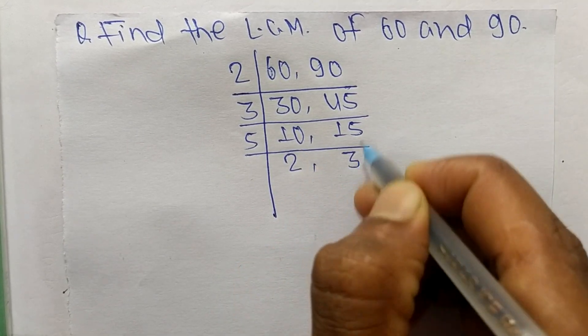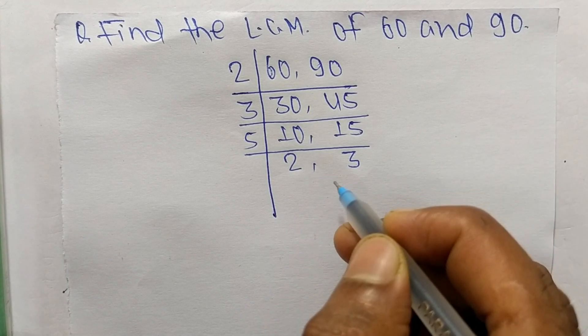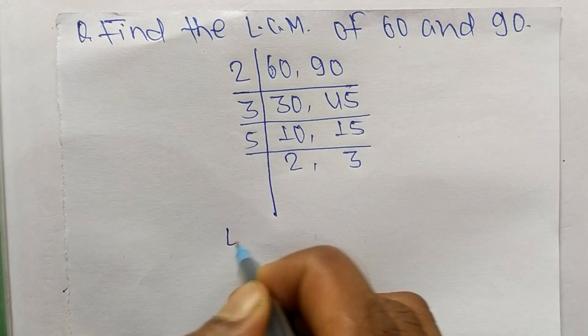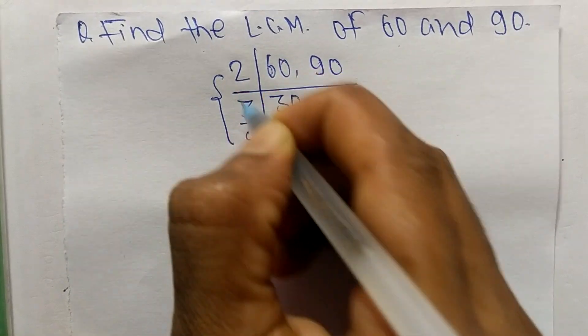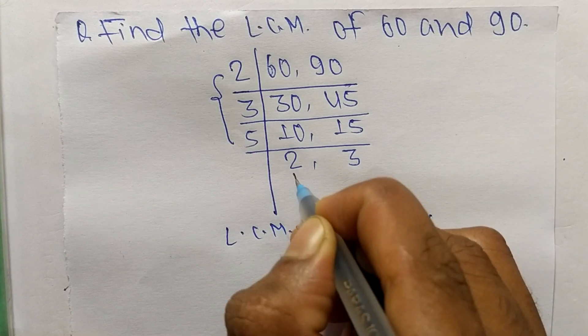And 5 times 3 means 15. So at last we have 2 and 3, which is not exactly divisible by the same number. So its LCM is equal to, from this part it is 2 times 3 times 5, and from this part it is 2 times 3.